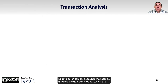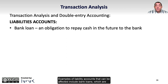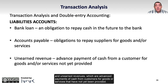Examples of liability accounts that can be affected include bank loans, which are obligations to repay cash in the future to a bank; accounts payable, which are obligations to repay suppliers for goods or services; and unearned revenues, which are advanced payments of cash from customers for goods or services that have not yet been provided.